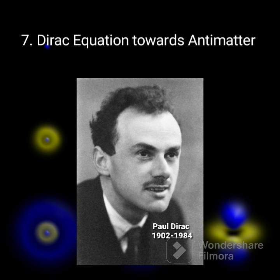7. Dirac Equation and Antimatter, 1928: British physicist Paul Dirac formulated an equation that combined special relativity with quantum mechanics to describe the behavior of electrons. This equation predicted the existence of antimatter particles, including the positron, the antiparticle of the electron, leading to new insights into particle interactions.